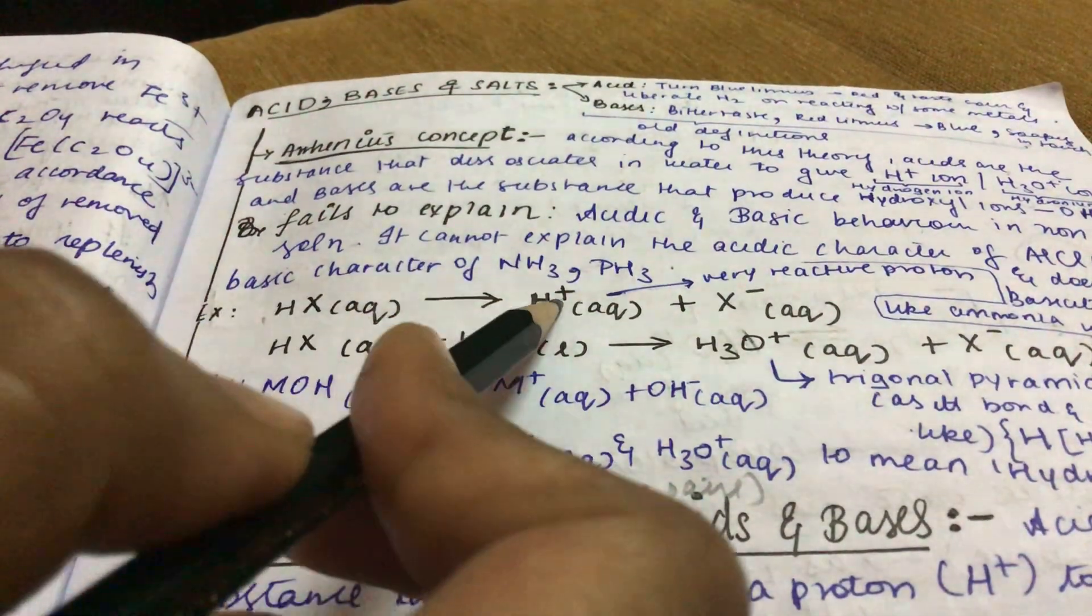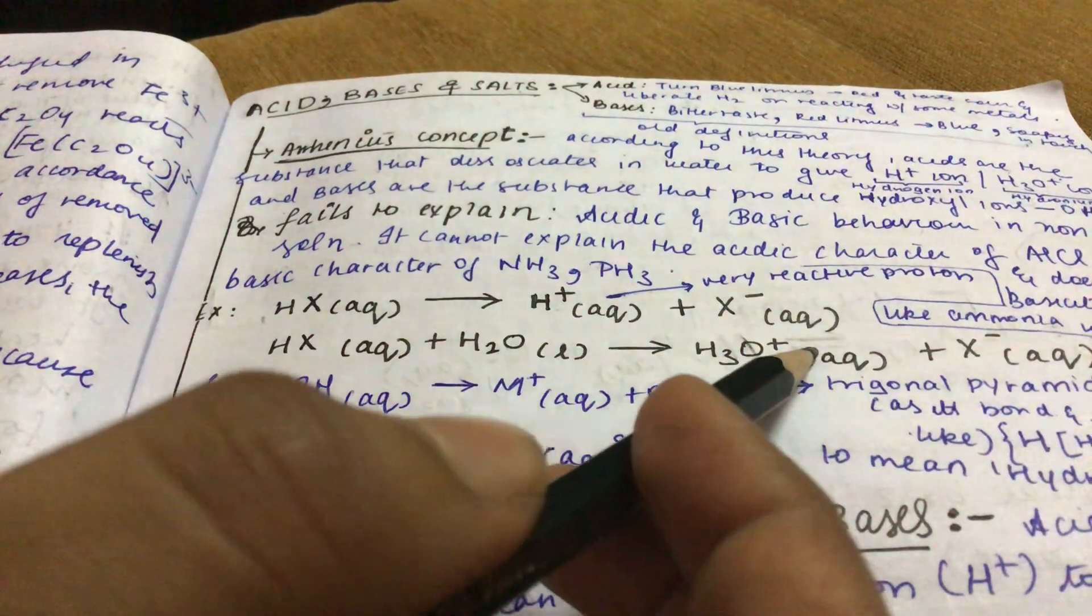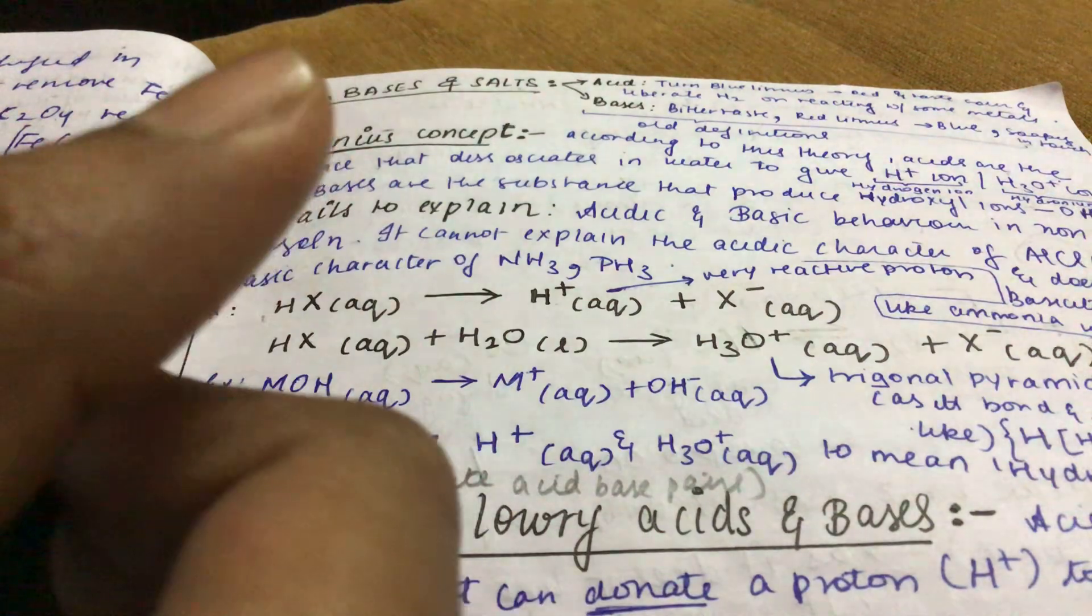HX aqueous gives H plus aqueous plus X minus aqueous. HX aqueous plus H2O liquid gives H3O plus aqueous plus X minus aqueous. This is one example.